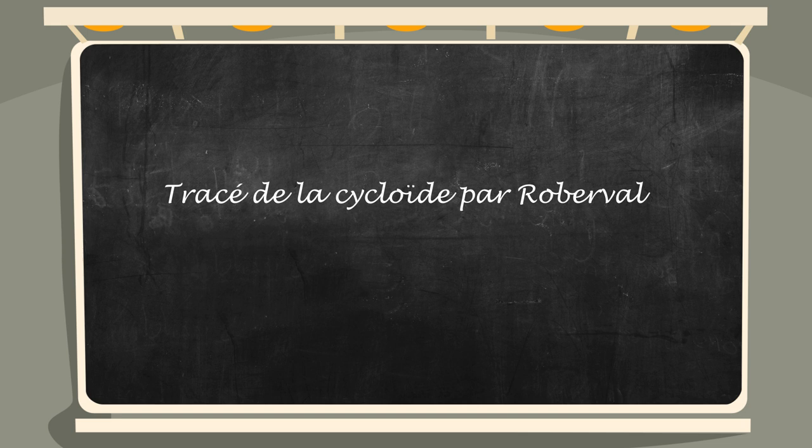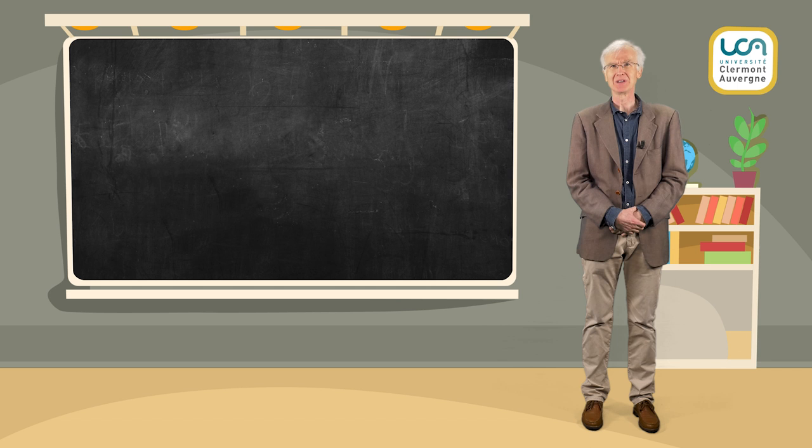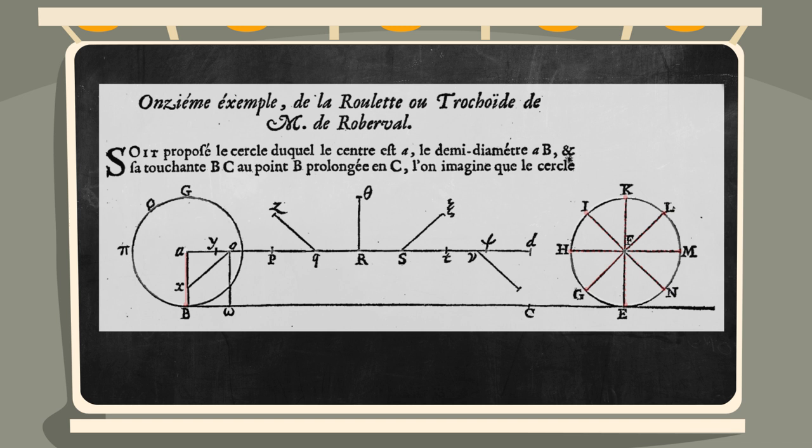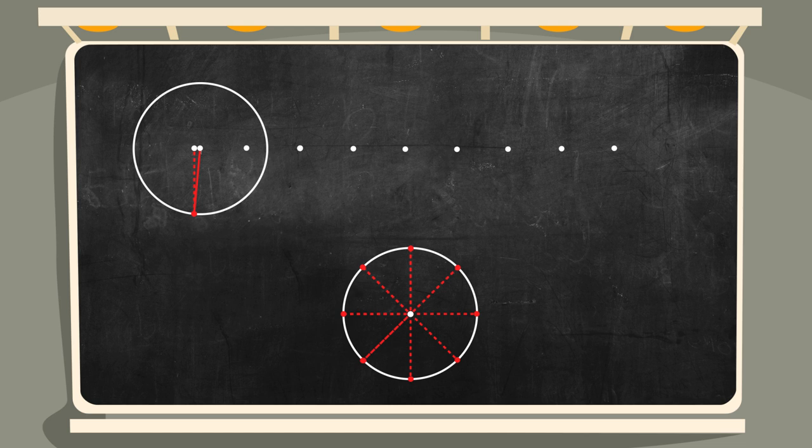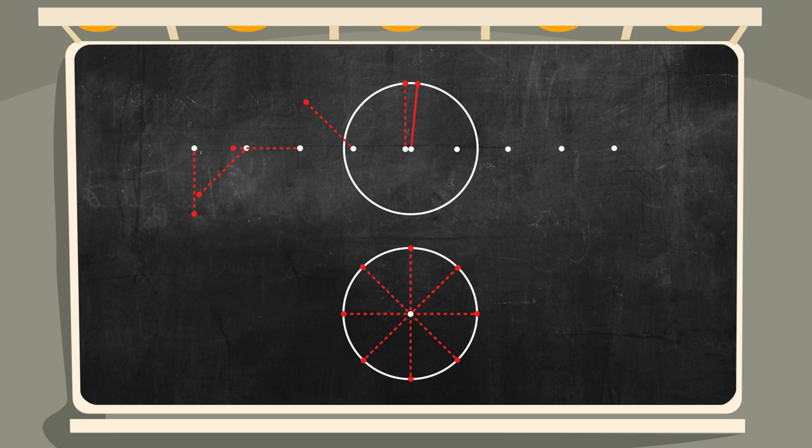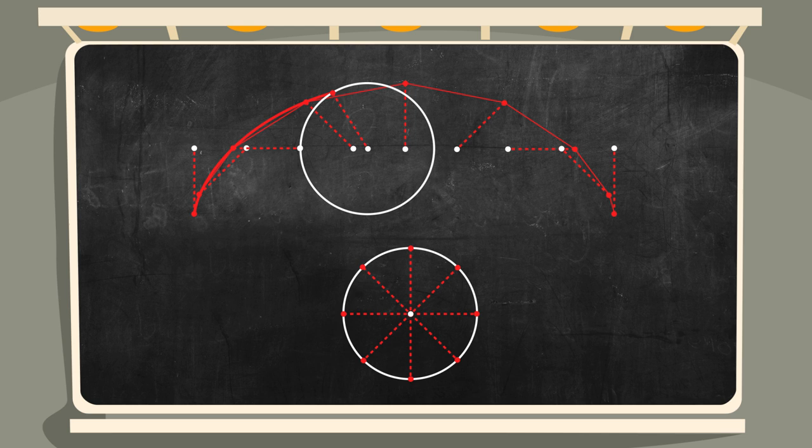Au XVIIe siècle, comme aujourd'hui, le tracé à main levée d'une courbe comme la cycloïde n'est pas une chose aisée. Voici la construction point par point proposée par Roberval dans ses cours au Collège Royal, aujourd'hui Collège de France. Roberval propose une construction très cinématographique, avec une chronologie en huit images. Les huit points de la cycloïde sont obtenus après un découpage du disque en huit parts égales de camembert, puis en traçant des segments parallèles aux rayons vecteurs dont les origines sont réparties de manière équidistante sur l'axe délimité par le centre du cercle. L'arche polygonale est une interpolation de l'arche de la cycloïde.